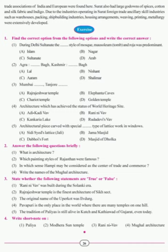Surat was an international port where many trade associations of India and Europe were found. It had large godowns of spices, cotton, silk fabric and indigo. Due to industries operating in Surat, ancillary industries such as warehouses, packing, ship building, housing arrangements, weaving, printing and metallurgy were extensively developed.